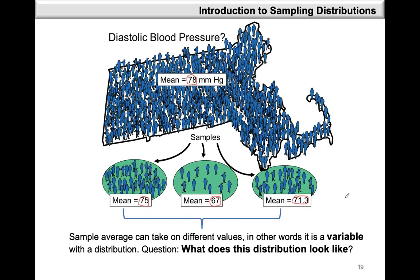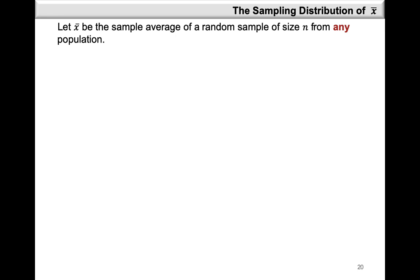Our next question is: what does the distribution of these sample averages look like? We define x-bar as the sample average of a random sample of size n from any population. This means we could be working with a population from a discrete distribution such as the binomial or discrete uniform distribution, or from any continuous distribution such as the t-distribution, which is symmetric, or the chi-square distribution, which is positively skewed.